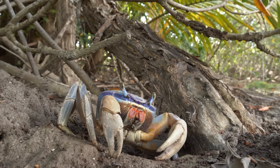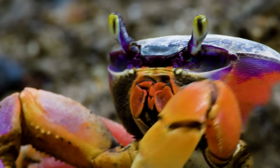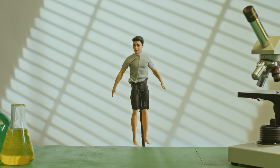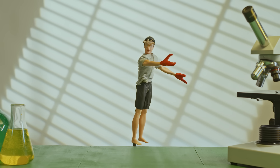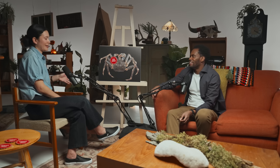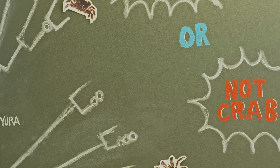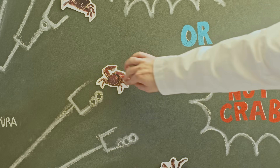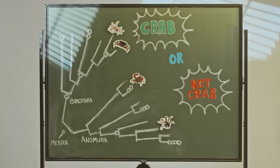Have you ever heard of the term carcinization? It's all over the internet right now — like a viral meme. It's this idea that everything is evolving into crabs. People are actually slightly worried that humans are going to be next — that we are going to turn into crabs. That's not going to happen. But it's based on a scientific observation that other crustaceans are evolving to be more crab-like. In the last 180 million years, this has happened about five times, which is a lot.